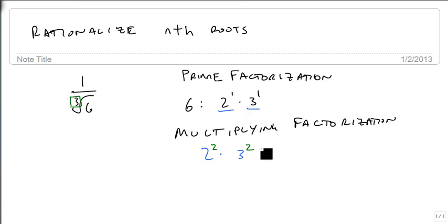Do the same thing with the 3. So 3 to the 1st times 3 squared. This then becomes 2 squared times 3 squared is 4 times 9, which is 36. So we're going to multiply by the cube root of 36 over the cube root of 36.